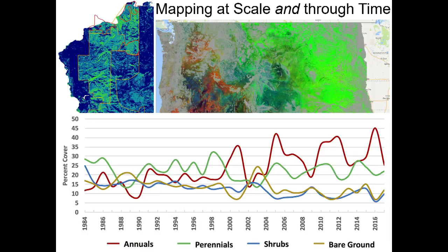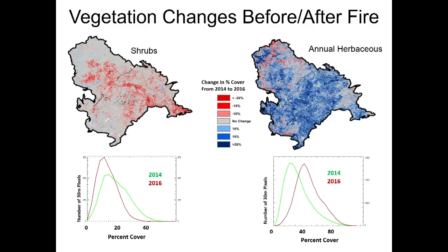The neat thing is we can now track this through time. So when fires, disturbances, or management actions happen, we can go back and see what it was historically, and that can inform us moving forward. The Soda Fire burned approximately 300,000 acres on the border of Oregon and Idaho in 2015. We looked at our data before and after the fire and saw what we expected — the fire caused a decrease in shrubs and an increase in annual grasses.